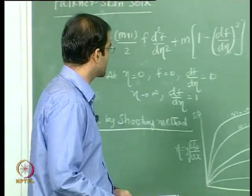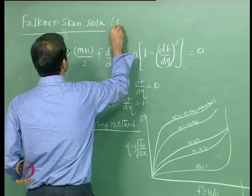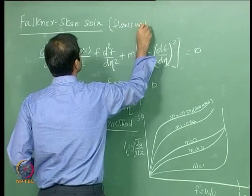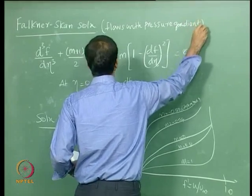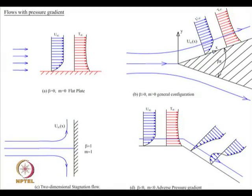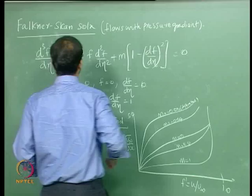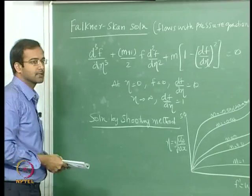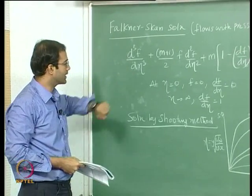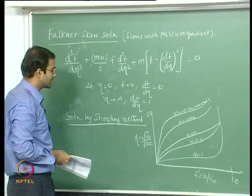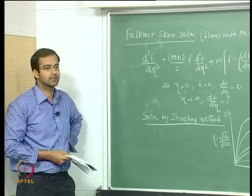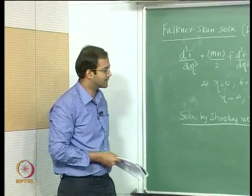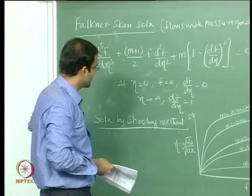The final similarity differential equation appears in this particular form with these boundary conditions. You have to use the shooting method to solve the ODE numerically. I have also given you the three first-order ODEs to which it can be reduced, with the same boundary conditions as the Blasius equation.